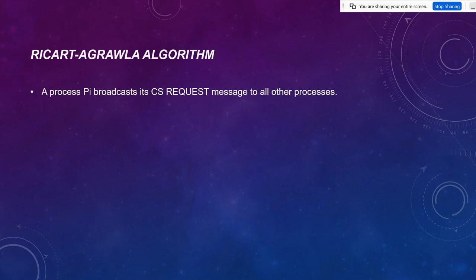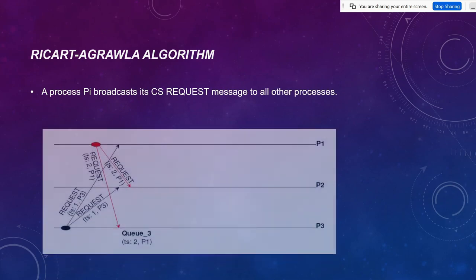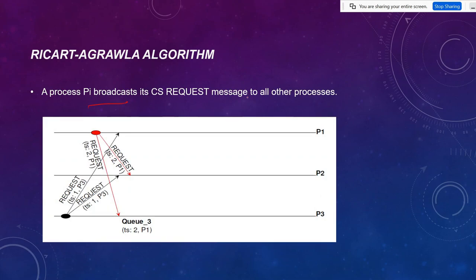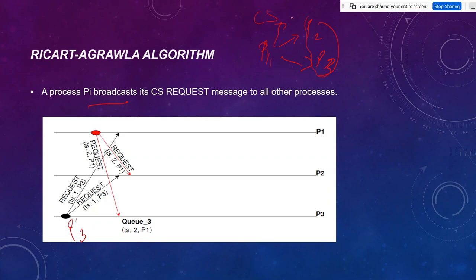First step, same as in Lamport's algorithm: process Pi broadcasts a CS request message to all other processes. As we see in our diagram, P3 initially wants to enter the critical section, so it sends requests to P1 and P2. Next, P2 also wants the critical section, so P2 also requests P1 and P3. In short, if P1 wants to request, it sends to P2 and P3, and P1 waits for replies from both before going to the critical section.